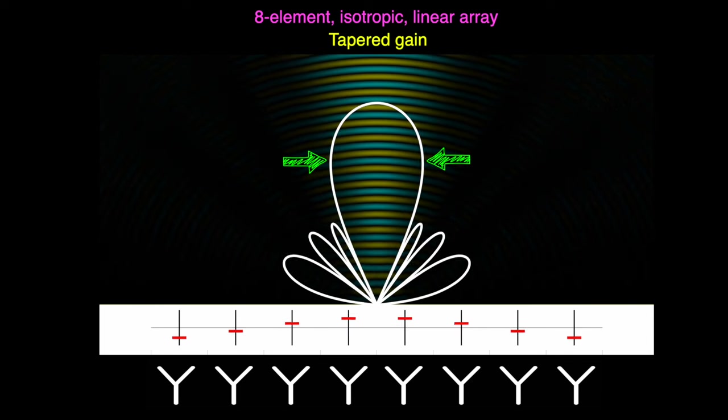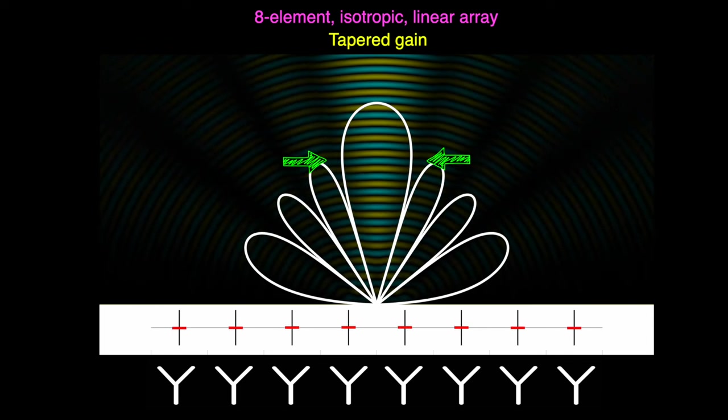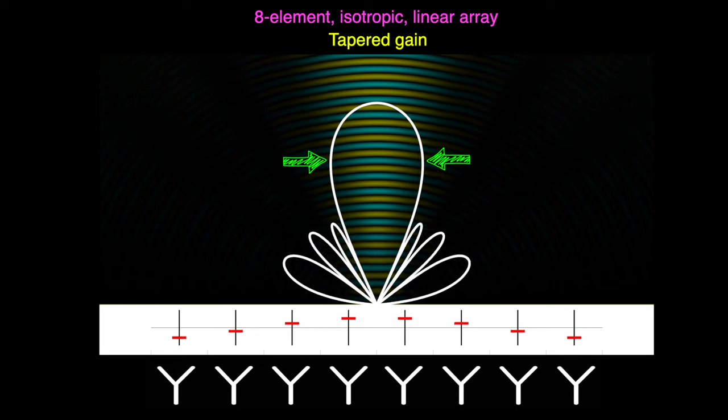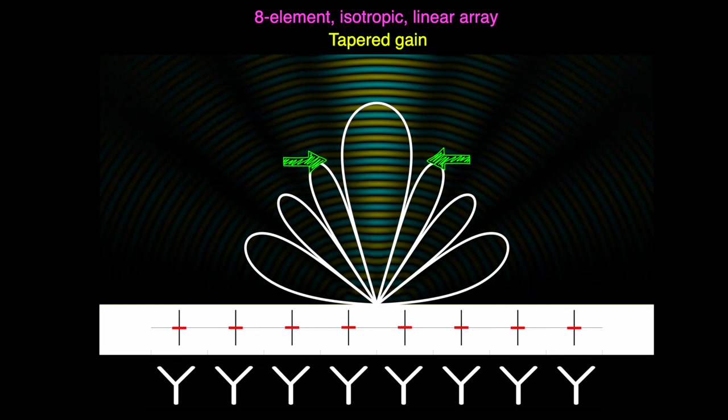So with tapered gains, we're trading the resolution of the radar for lower side lobe gain. For older radar systems, tapering would be achieved using analog attenuators in line with each element, and they would be more or less fixed for a given array. So you would pick a tapering strategy that would produce the pattern you need, and then shift the phase to steer that pattern.